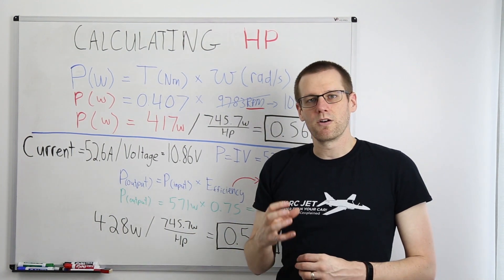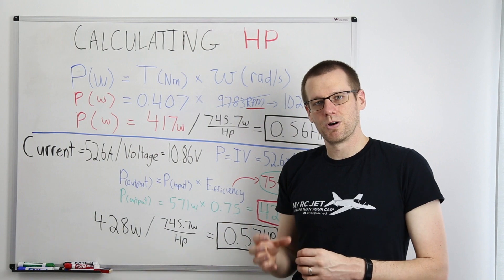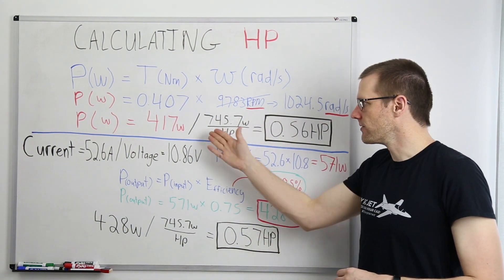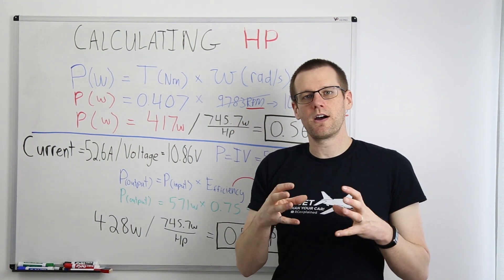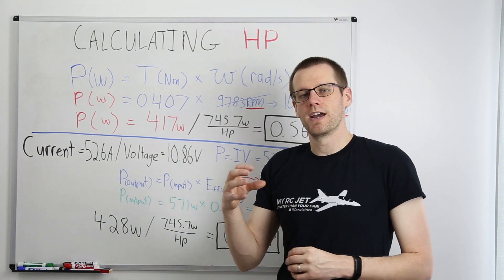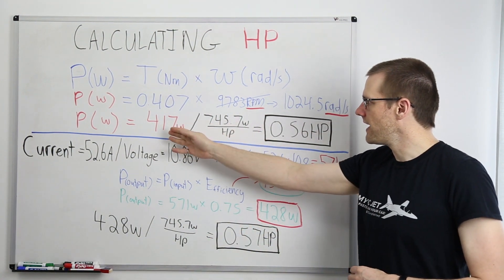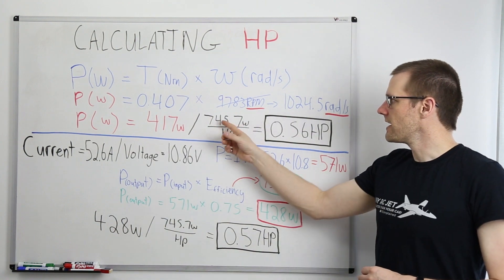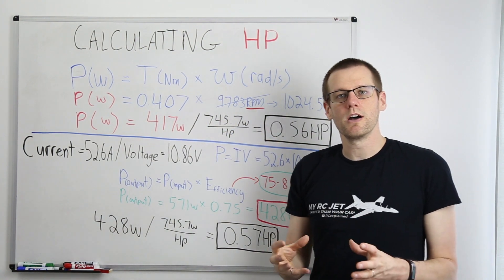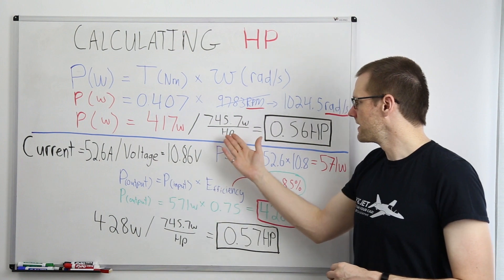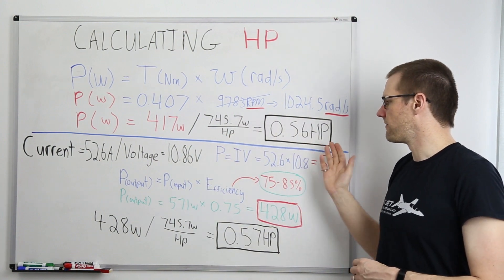This is the actual amount of power that the propeller on the motor shaft is experiencing. Now the only thing left to do here is to take our power output in Watts and convert it into the units of horsepower. To do that, all we do is divide our 417 by 745.7 Watts for every horsepower. This gets us a result of 0.56 horsepower.